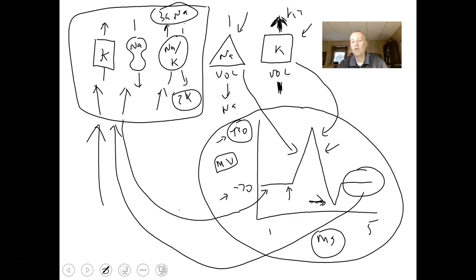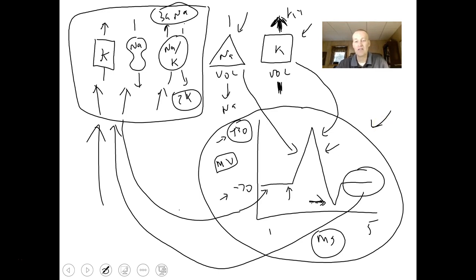I just wanted to clarify that a little bit more. It will be worth your time to think about this and get it arranged in your mind, because when we go to the nervous system, we'll come back and talk more about these leak channels, voltage-gated channels, and potassium voltage-gated channels and what we see on an oscilloscope. Go ahead and get that in your memory banks so we can come back and talk about it again.